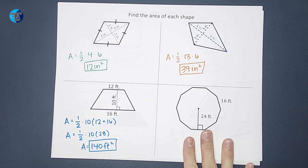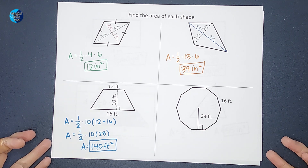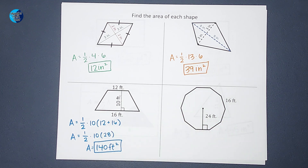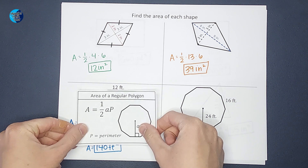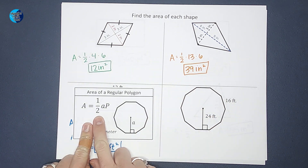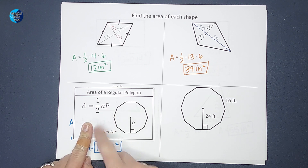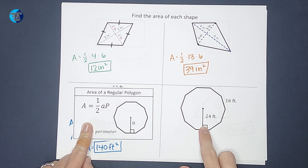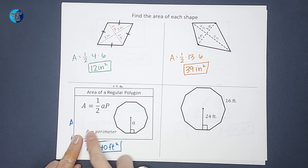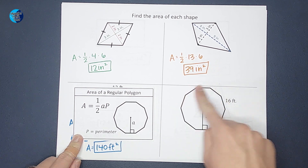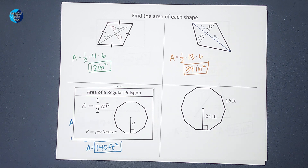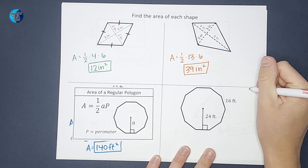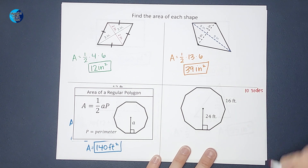This next shape is what we call a regular polygon — all sides are the same length. The area of a regular polygon is one-half times a times p, where a stands for apothem — that's the distance from the center to the middle of one of the sides, creating a right angle — and p stands for perimeter. Let's count the sides: one, two, three, four, five, six, seven, eight, nine, ten — so it has 10 sides.